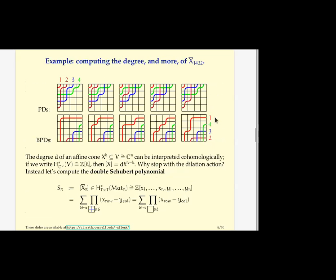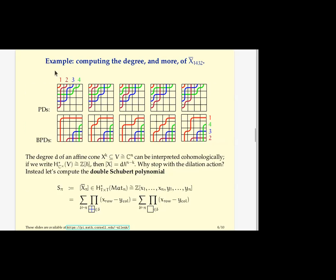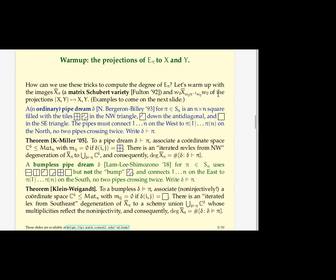So we've long known how to compute the degree of matrix Schubert varieties by counting pipe dreams. So an ordinary pipe dream, the way I want to do it today, I'm going to use these tiles in the northwest. So these five guys across the top, these are the sort of ordinary pipe dreams I want to think about. So traditionally you think about in the southeast there being solid elbows, but I want to do it this way.